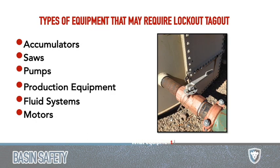Different types of equipment that require lockout tagout on the electrical side include accumulators, saws, pumps, production equipment such as treaters and separators, fluid systems, motors, heaters — a million different things require lockout tagout. And once again, your plan needs to recognize those types of equipment in your program.